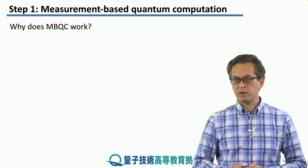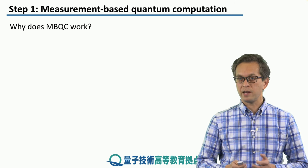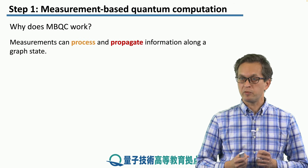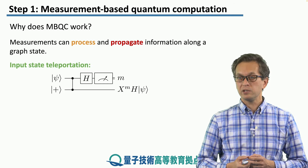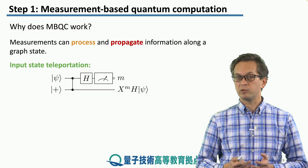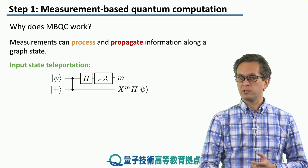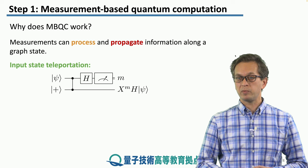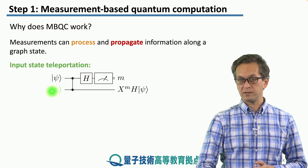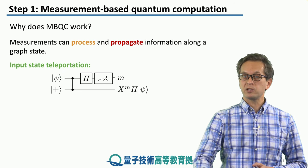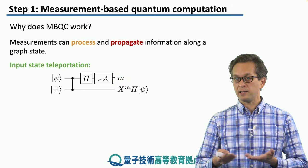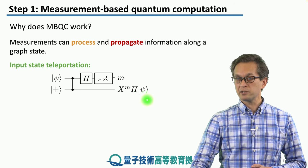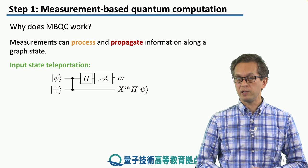We said that MBQC is very different from a quantum circuit model. How does MBQC work? Why is it that the computation is driven by measurements only? Well, the answer lies in the fact that measurements can both process as well as propagate information along a graph state. In order to see it, let's consider a simple example. This is called an input state teleportation. And it's very similar to the teleportation protocol that we've been talking about in terms of quantum networks. Let's say that we have only two qubits, and the first is initialized in an arbitrary superposition given by the state psi. And the second qubit is initialized in a plus state. After entangling them with a CZ gate, we measure the first qubit in the X basis. Or we can simply apply Hadamard gate and then measure in the Z basis. The state of the second qubit is given by this expression. We apply Hadamard to the initial state and a conditional unitary Pauli X, depending on the outcome of our measurement on the first qubit.